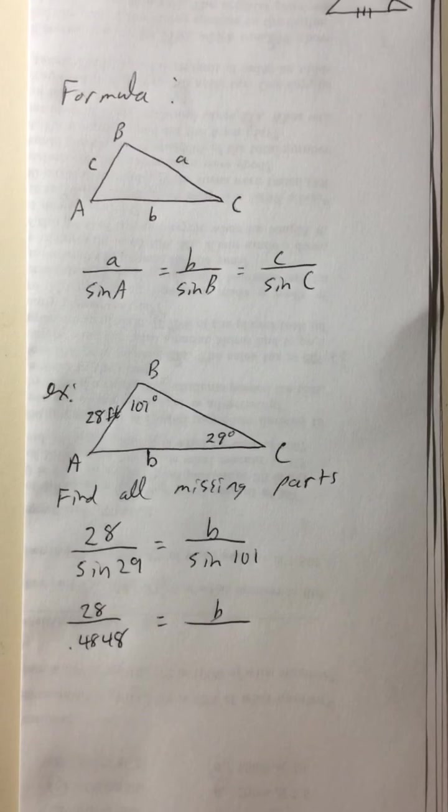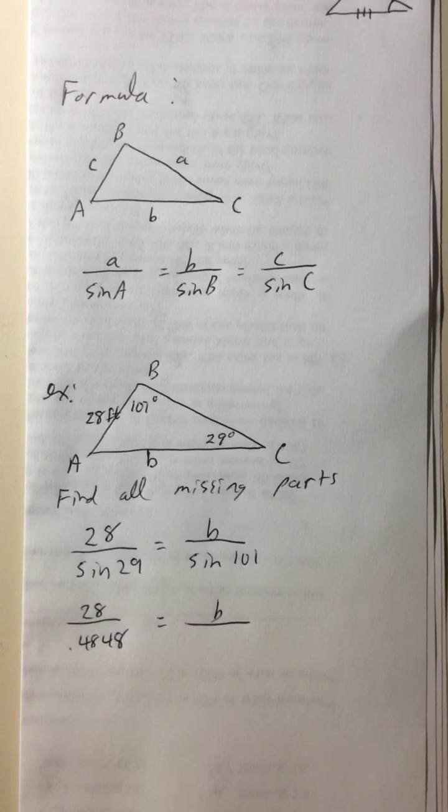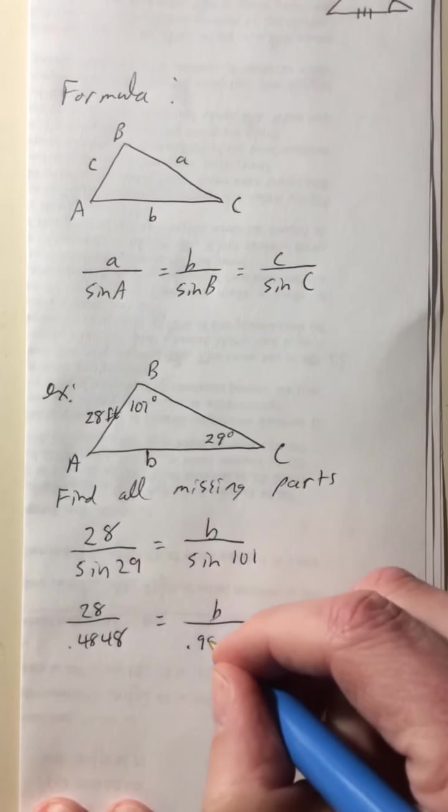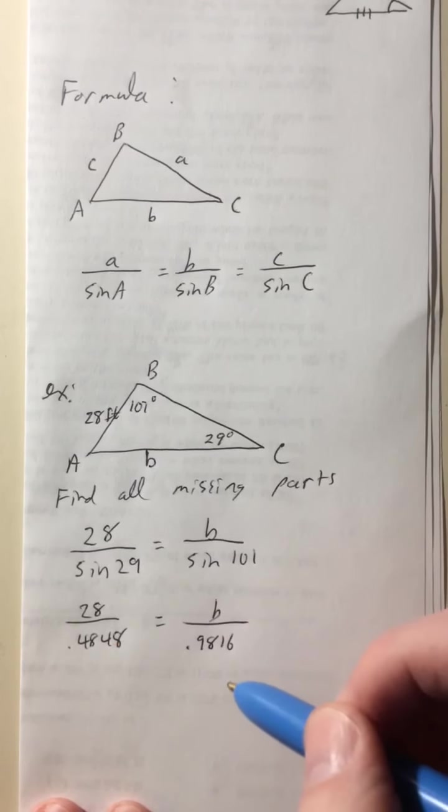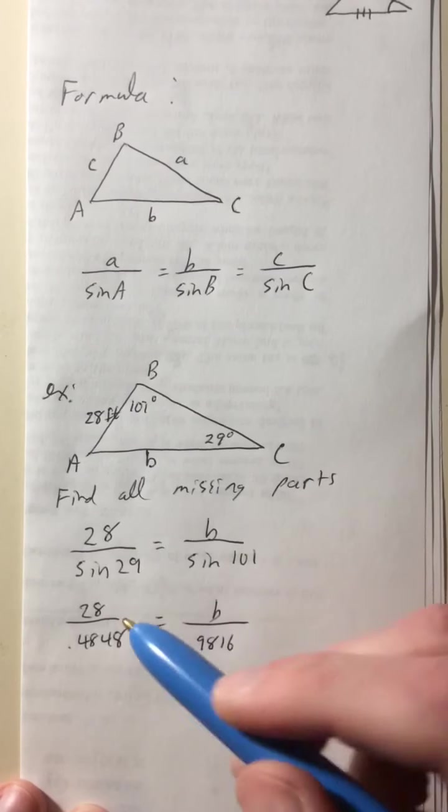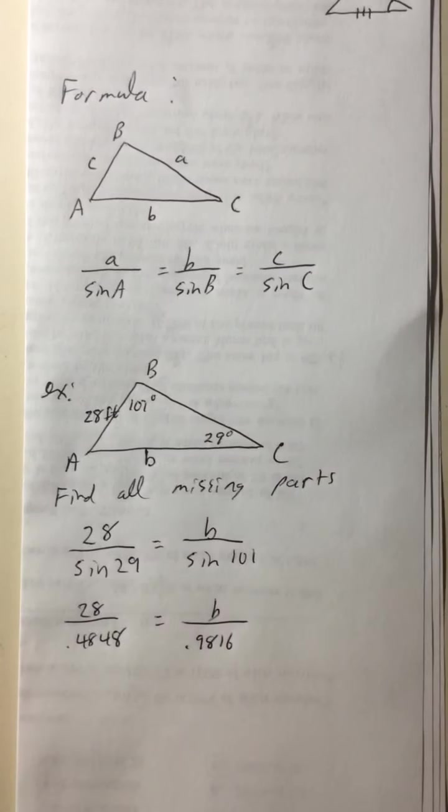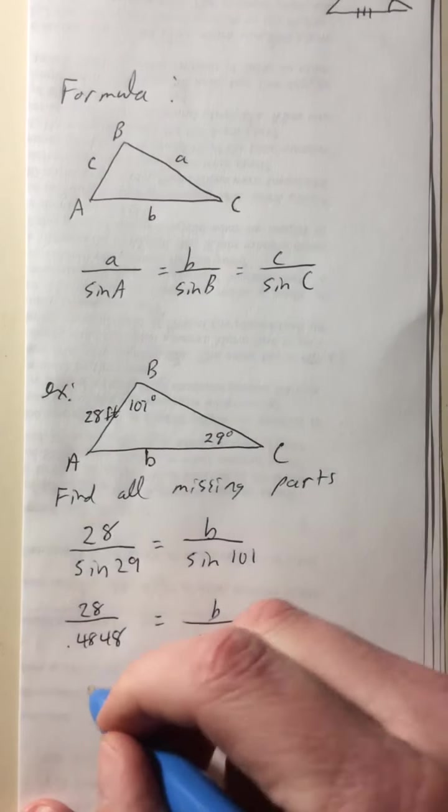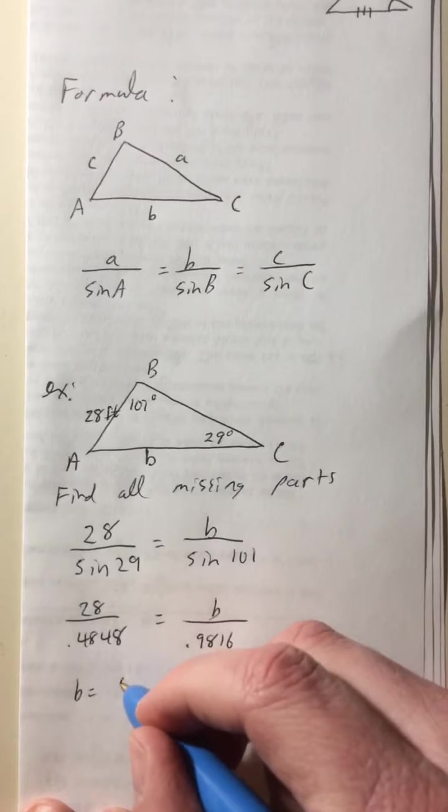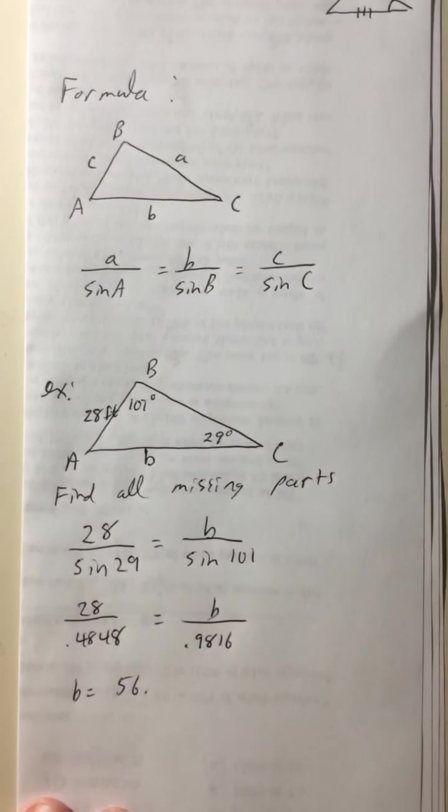So we got 28 over 0.4848 equals B over the sine of 101. Sine of 101 equals 0.9816. And traditionally, we calculate with four decimal places, because back in the day, we actually had tables to do this. And the tables were calculated out to four decimal places. So we just multiply these two and divide by that one, and we're done. So times 28 equals, divide by 0.4848 equals, bada-bing, bada-boom, 56.69.